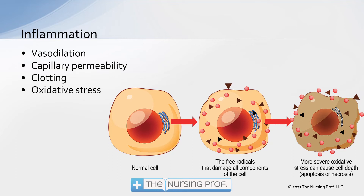Since there isn't any bacteria to kill — just cigarette smoke or whatever the irritant is — that free radical is now going to start to attack healthy tissue. The free radicals attack the tissue and we end up with severe oxidative stress. It causes cell death, and unfortunately these are the cells of the lung itself: the alveolus and the lung tissue.